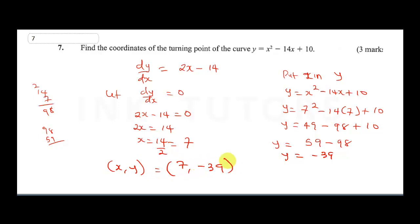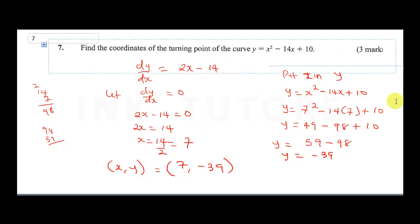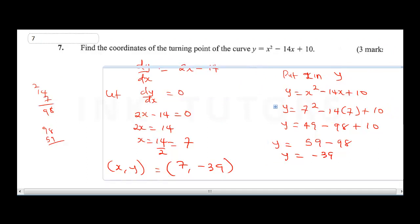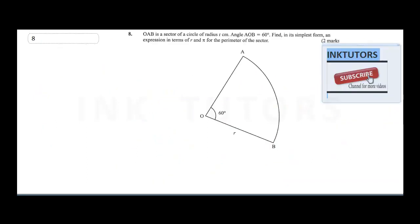To summarize: first differentiate the equation, equate dy over dx to zero to get x, then substitute x back into the equation to get y. That takes us to question eight.